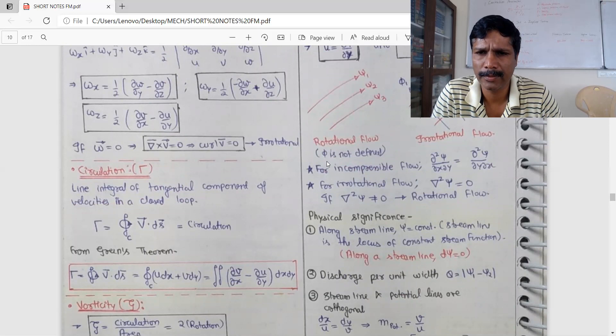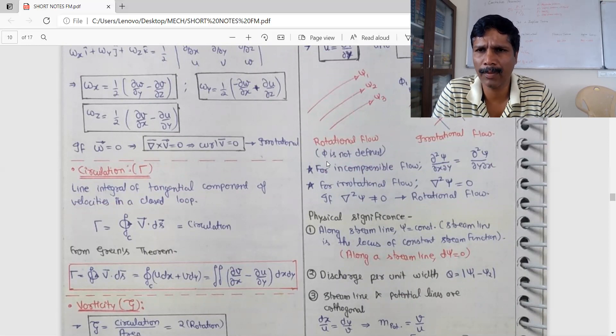This is the signal along streamline. psi equal to constant. Streamline is the locus of the constant stream function. Discharge per unit is q equal to modulus of psi1 minus psi2.